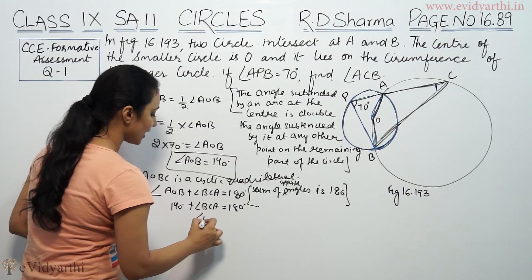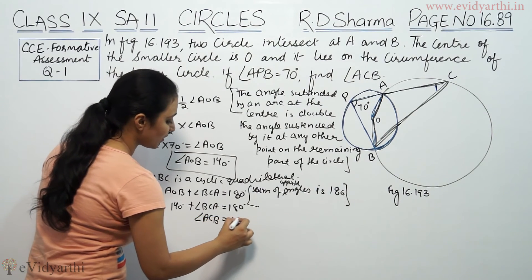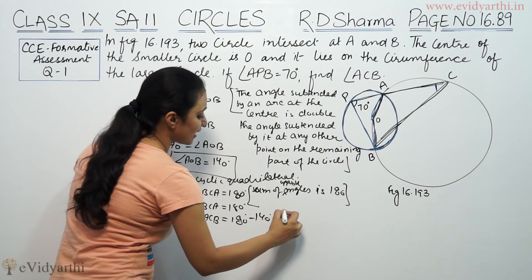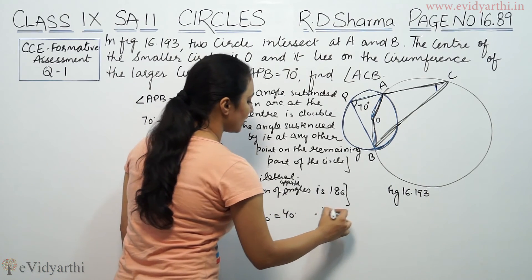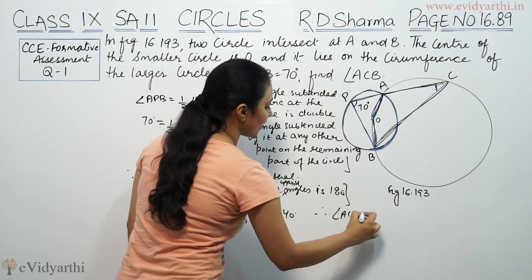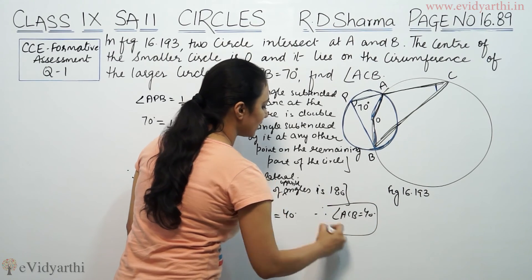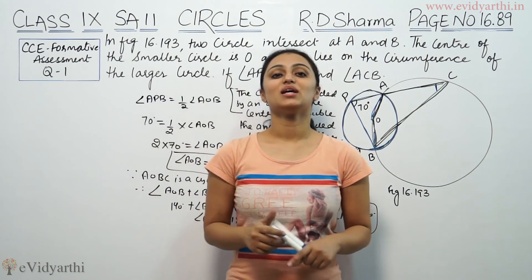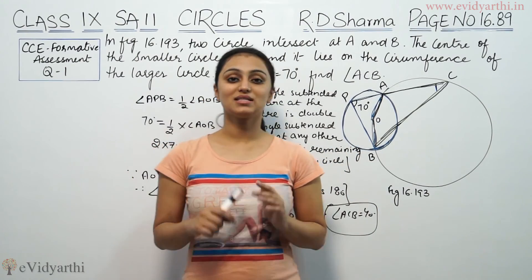Therefore, angle ACB equals 180 minus 140 degrees, which is 40 degrees. So angle ACB is 40 degrees. This was question number 1 from R.D. Sharma.